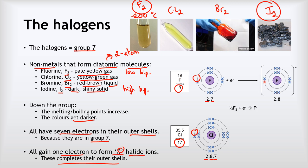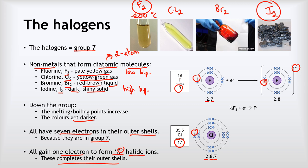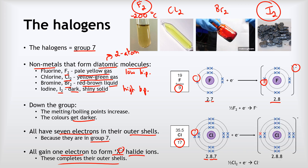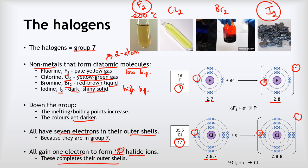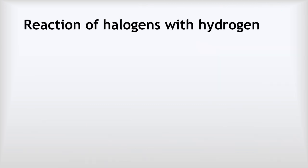For fluorine, it will gain an electron to form an F minus ion with a single negative charge. The red electron shown is the one being gained, and now we've got a complete outer shell configuration of 2,8. Similarly for chlorine, it gains an electron to form a negative ion, and the electron configuration for that ion is a complete stable 2,8,8.